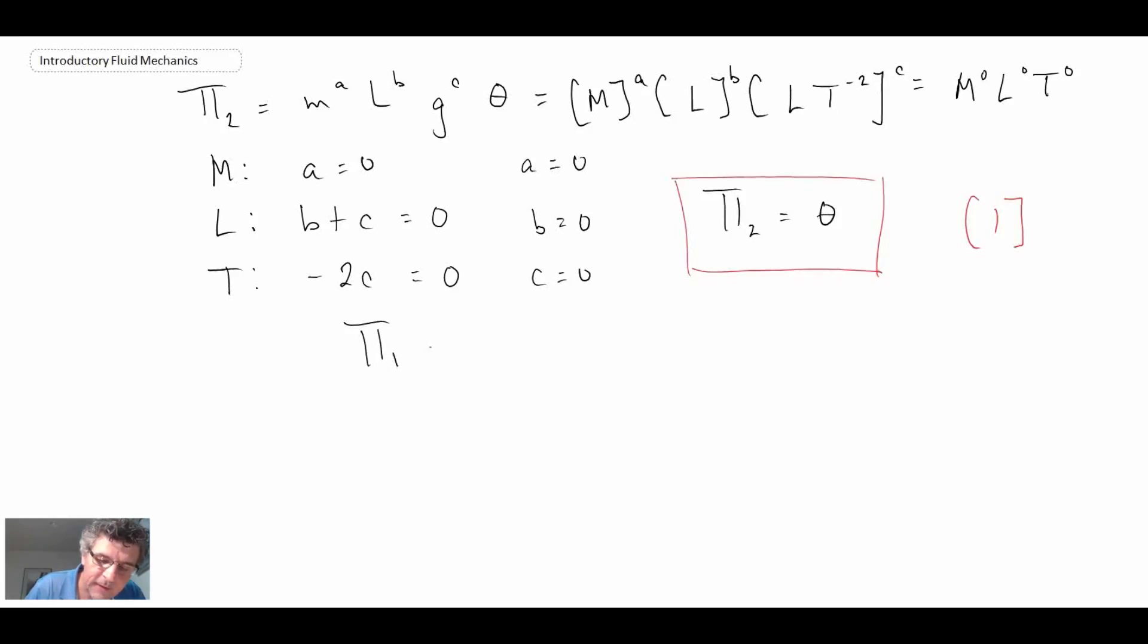So what we end up with here, going back to our original expression, pi 1 is equal to g of pi 2. If we look at this, and substitute in our values now, the pi groups that we've determined. For pi 1, we have T square root of g over L. And on the right-hand side, we have g of theta. So what I'm going to do, I'm going to rearrange that now and isolate for the period, T. And when we do that, we get an L over g, take a square root, g of theta. So that becomes the functional relationship for a pendulum.